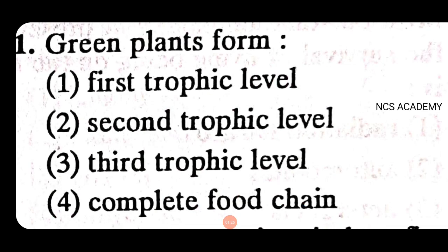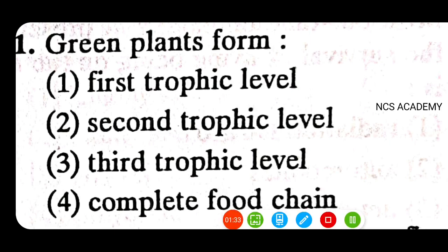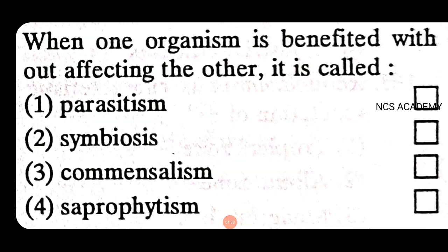Green plants form the first trophic level — the right answer is first trophic level. When one organism is benefited without affecting the other, it is called commensalism. The right answer is commensalism.